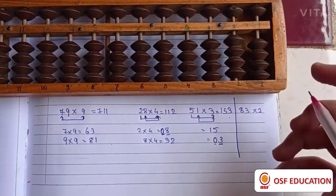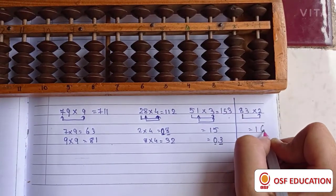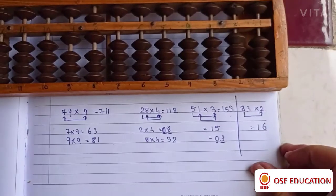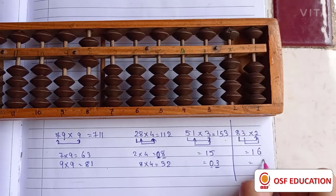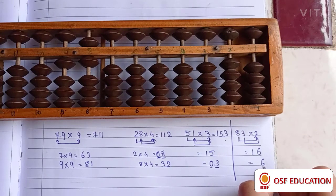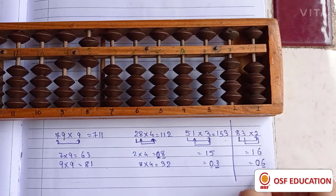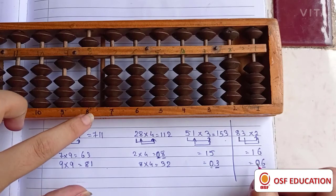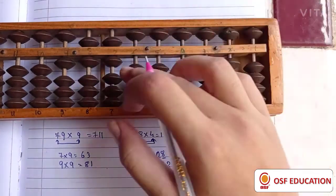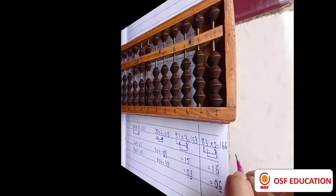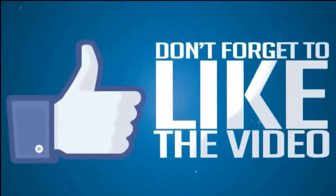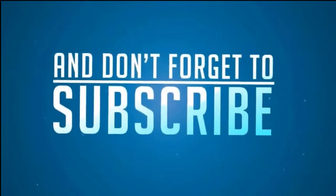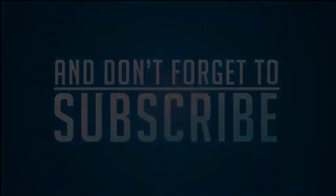Same way, 83 times 2 will give us 16. So here 1 and 6. And adding 3 times 2 gives us 6. But here again it is 1 digit number. So adding 0 before 6 will give us a 2 digit number. So adding 0 and here 6. So our answer is 166.